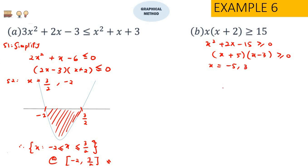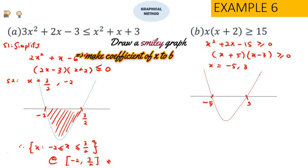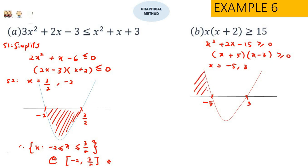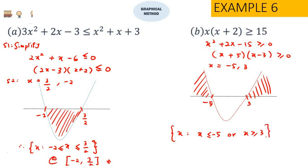Our x values are negative 5 and 3. By using the graphical method, we draw a smiley graph with the coefficient of x squared positive. Since it is greater than or equals to 0, that should be the outside region. The final answer in set notation is x less than or equal to negative 5, or x greater than or equal to 3. In interval form: negative infinity up to negative 5 included, union with 3 up to infinity — with open bracket for infinity.